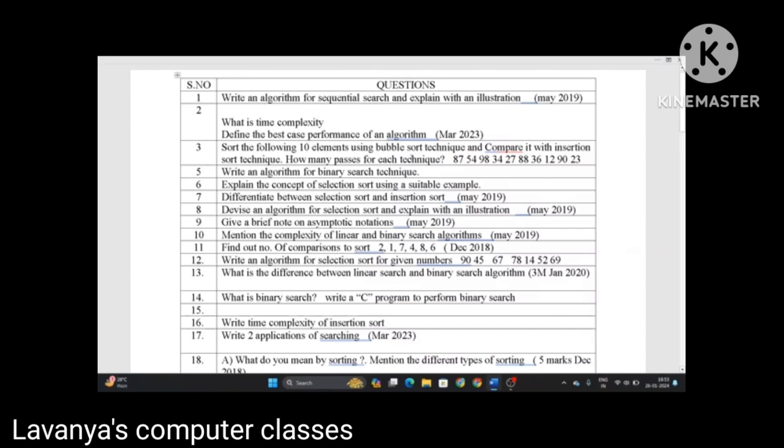Number of same questions are repeated because these all are from different question papers. But only in unit 5, only 5 techniques are there. 2 from linear searching and 3 from sorting techniques. That is why so many times the questions are repeated. That is why compulsory read these questions.